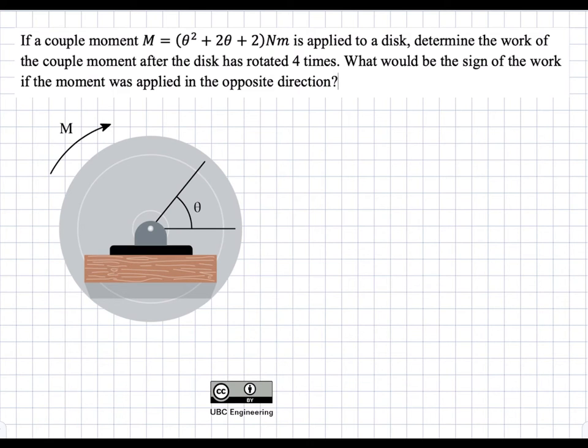We're asked to find the work by this moment after four whole rotations, and also what the sign of the work would be if the moment was applied in the opposite direction.